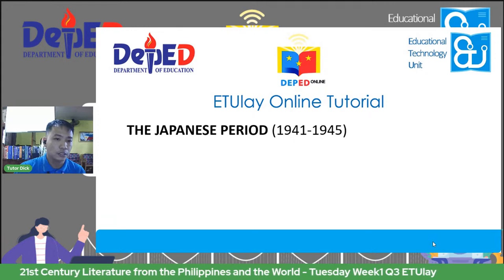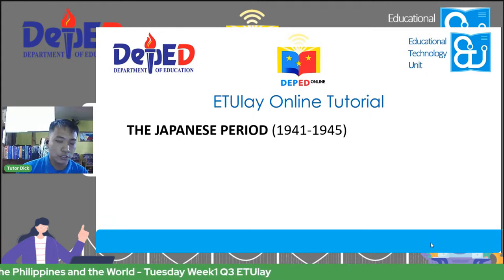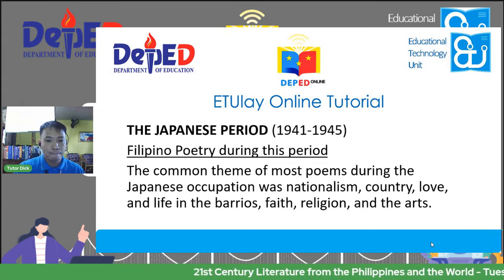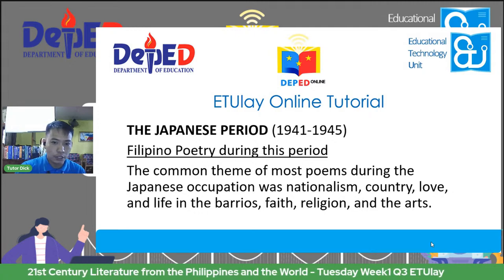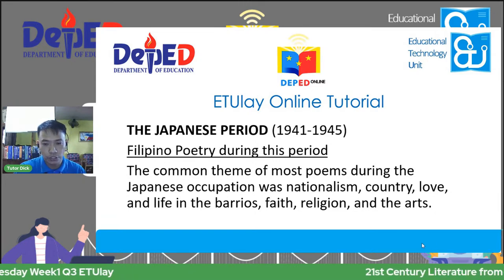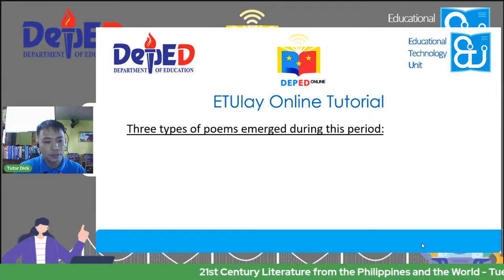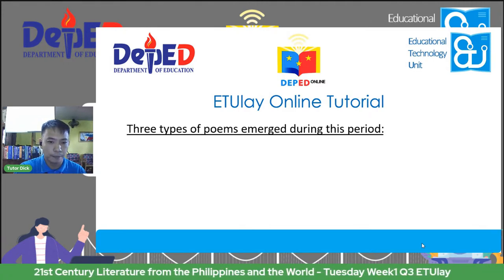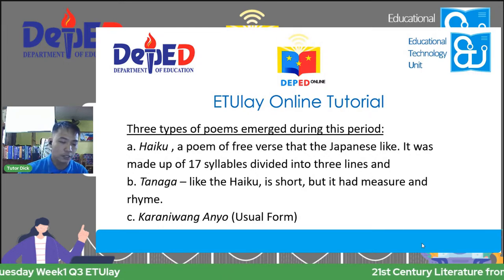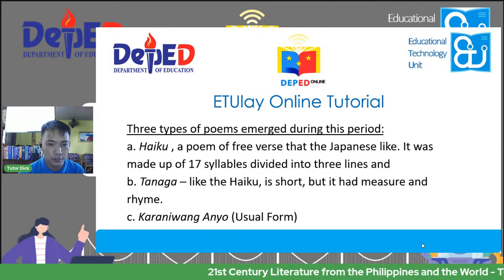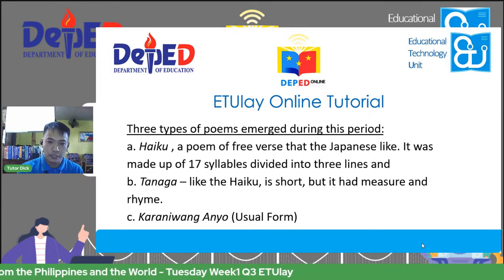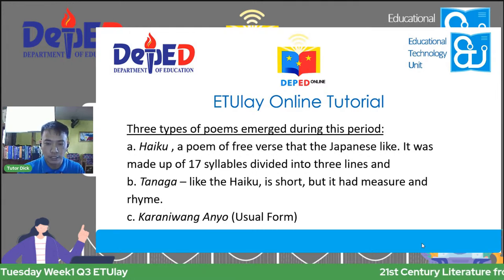And while the Americans were still here, along came the Japanese, 1941 to 1945 — one of the darkest years of our history and of our literature. During this time, the common themes of Filipino poetry would be the Japanese occupation, nationalism, country, love, and life in the barrios, faith, religion, and the arts. The most common types of poems during this time would be the haiku and the tanaga. The haiku is three verses made up of 17 syllables divided into three lines. Its partner, the tanaga, is short but has measure and rhyme.